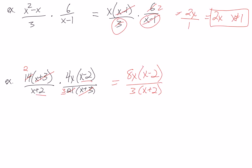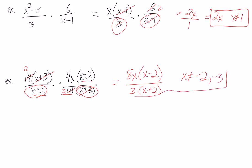So we write it like that and we're done. For our non-permissibles, the first one we'd have negative 2 for the (X plus 2) denominator. For the second one, the 21 doesn't do anything, and we have negative 3 for the (X plus 3) factor. So that'll be it for that question.